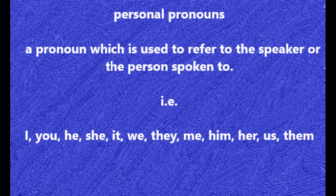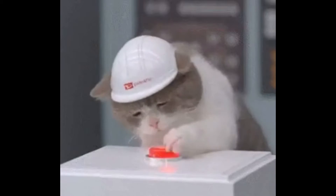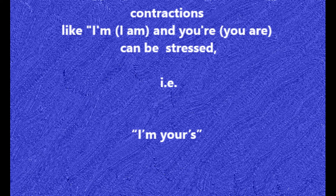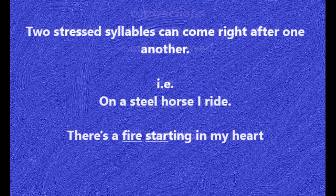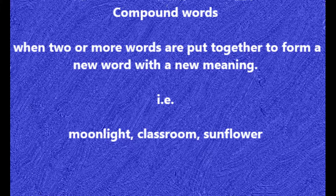Personal pronouns are usually not stressed unless some contrast is involved. An example would be a contraction — contractions that are normally unstressed, like 'I' and 'you,' when joined with words that are normally stressed, like 'am' and 'are,' can get stressed — i.e., 'I am yours.' Two stressed syllables can come right after one another, like 'on a steel horse I ride' or 'there's a fire starting in my heart.'